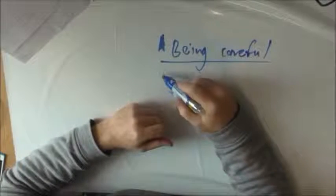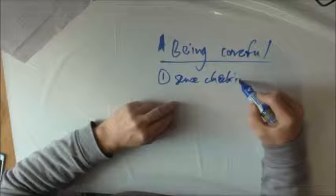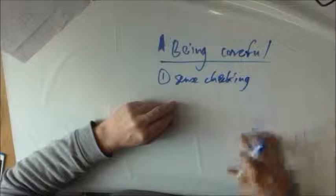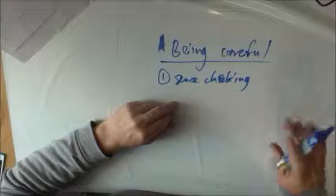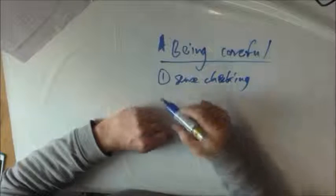So what are the key parts of being sensible? One is just sense checking, making sure your answers are sensible and what you would expect. So if you're working out that a year 10 earns £100,000 a year from working in the local store, then that's not realistic.